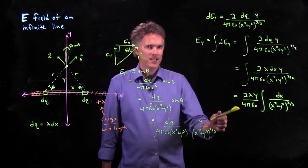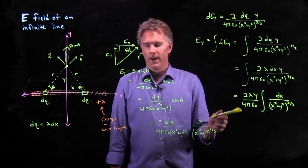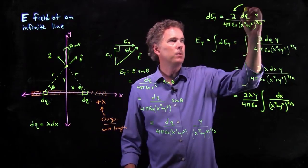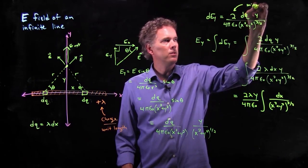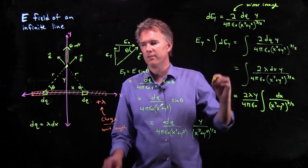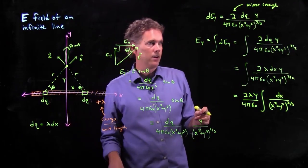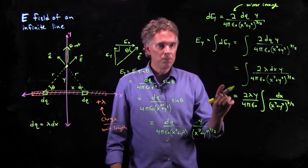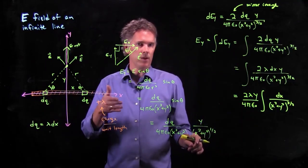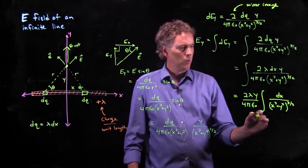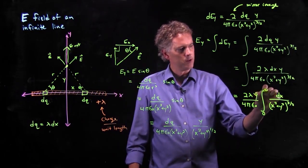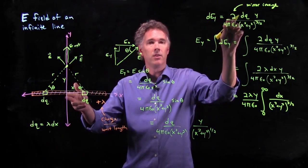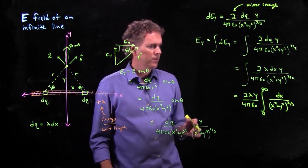And then we are left with the integral of dx over x squared plus y squared to the 3 halves. Now, what do we have to integrate from? Well, remember this factor of 2? That factor of 2 came because we have a mirror image on either side of the origin. If I have a positive charge here, I have a positive charge over there. And so we said we didn't need to take twice the vertical component. So that's where that factor of 2 came from. Which means, in our integral, we don't have to integrate from minus infinity to plus infinity. We have to integrate from 0 to infinity. We are just starting here and integrating out. Because we've already taken into account the other side through that factor of 2.